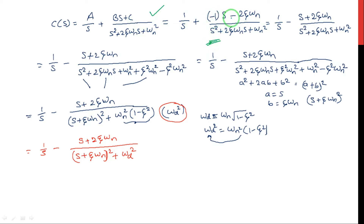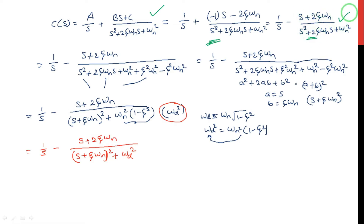After substituting A = 1, B = −1, C = −2ζωn into the partial fractions equation, I am taking the minus sign as a common factor from both the numerator terms. This gives us (s + 2ζωn) divided by the second order equation, with a minus sign in front.